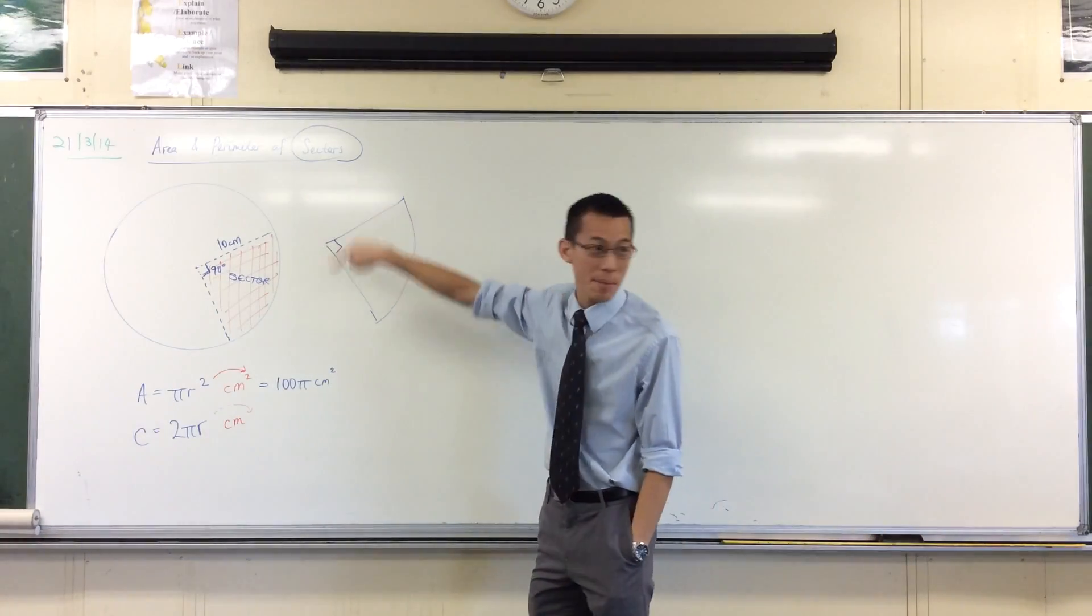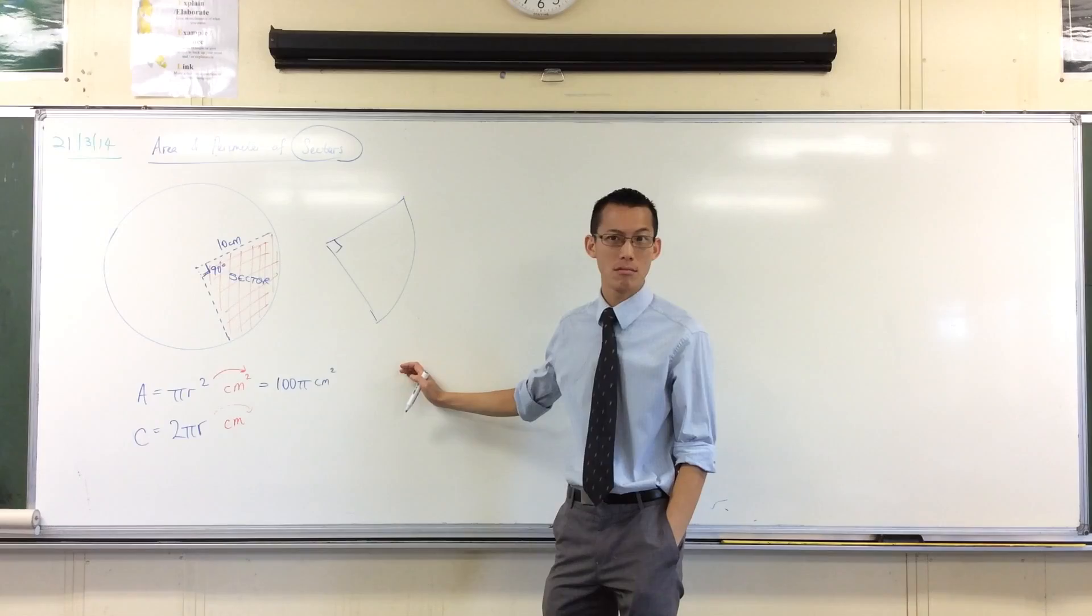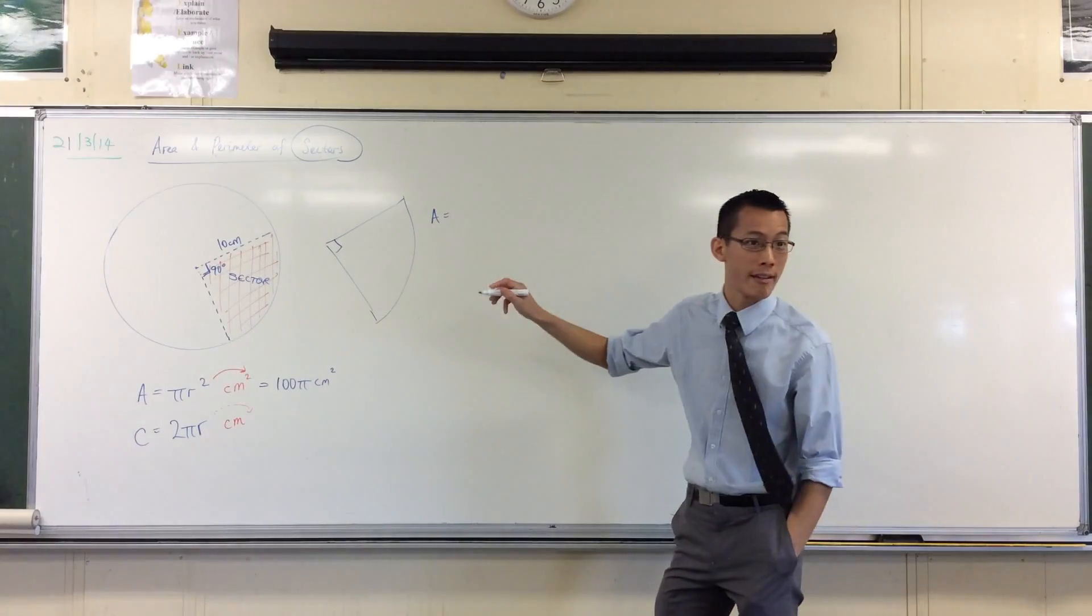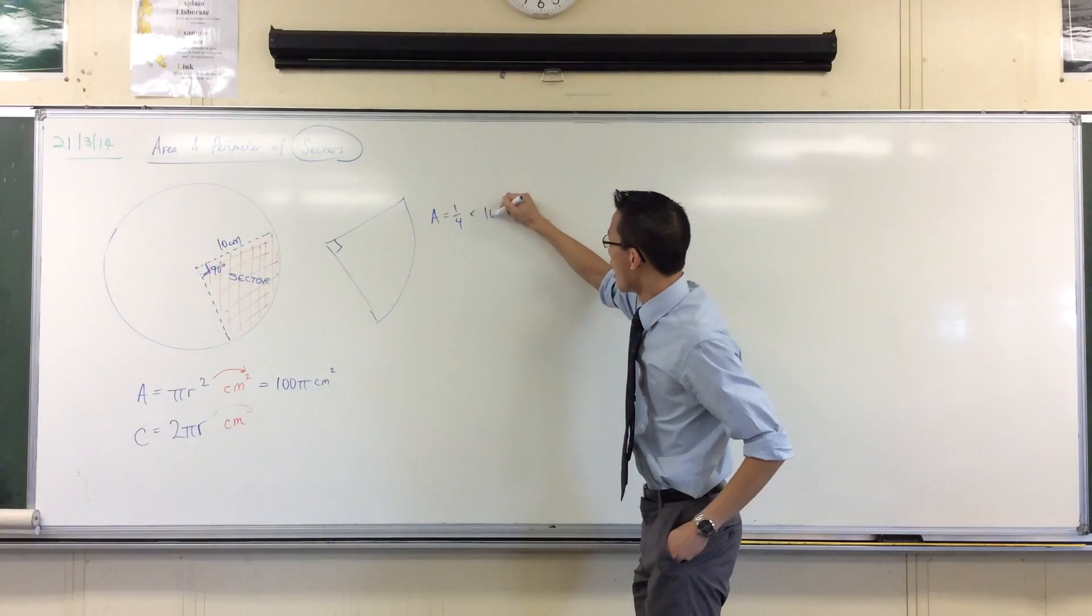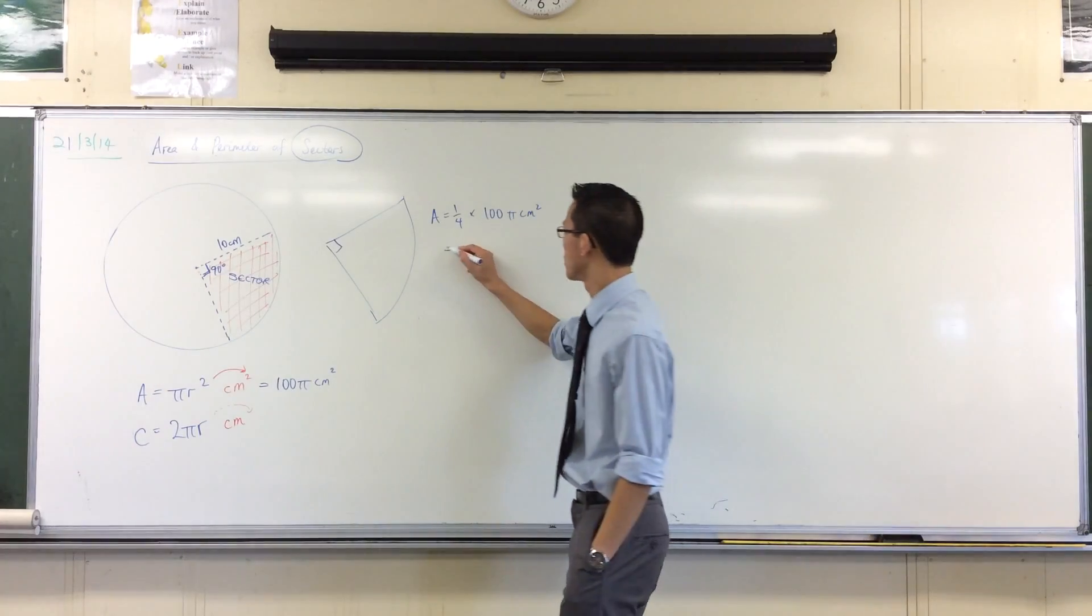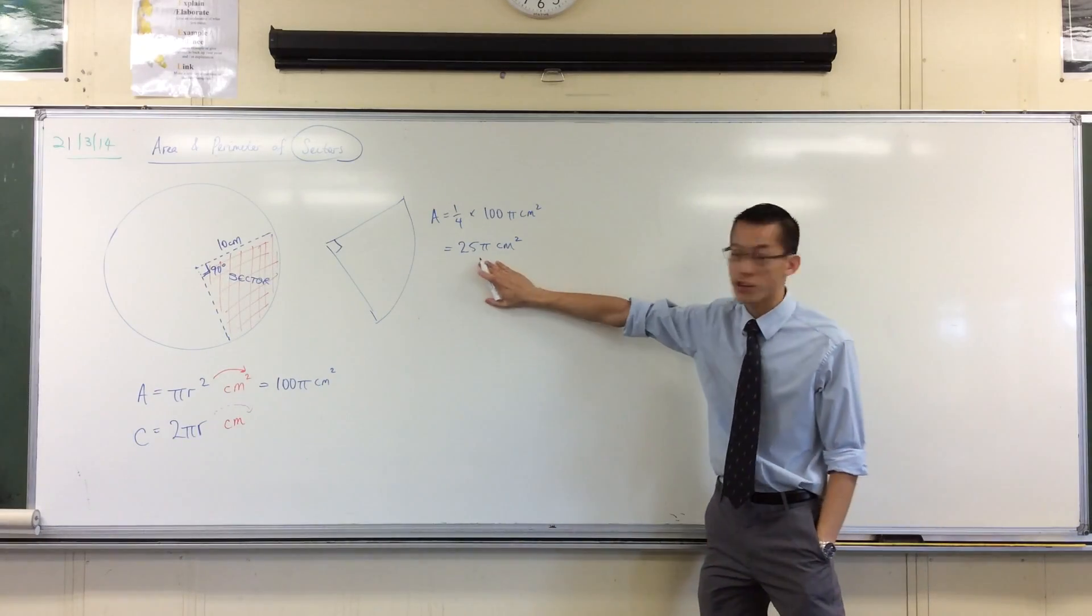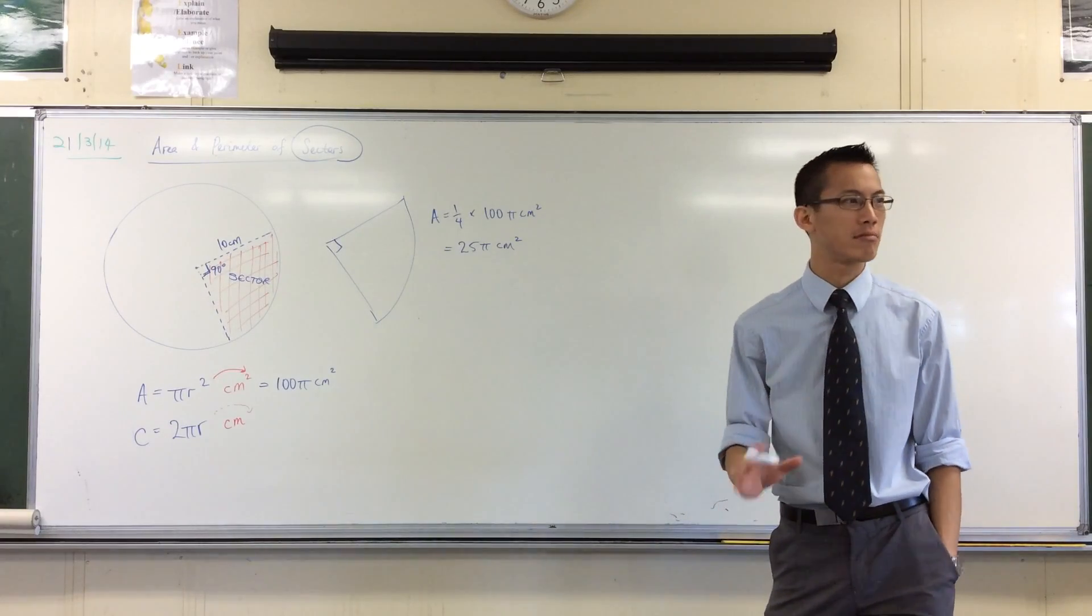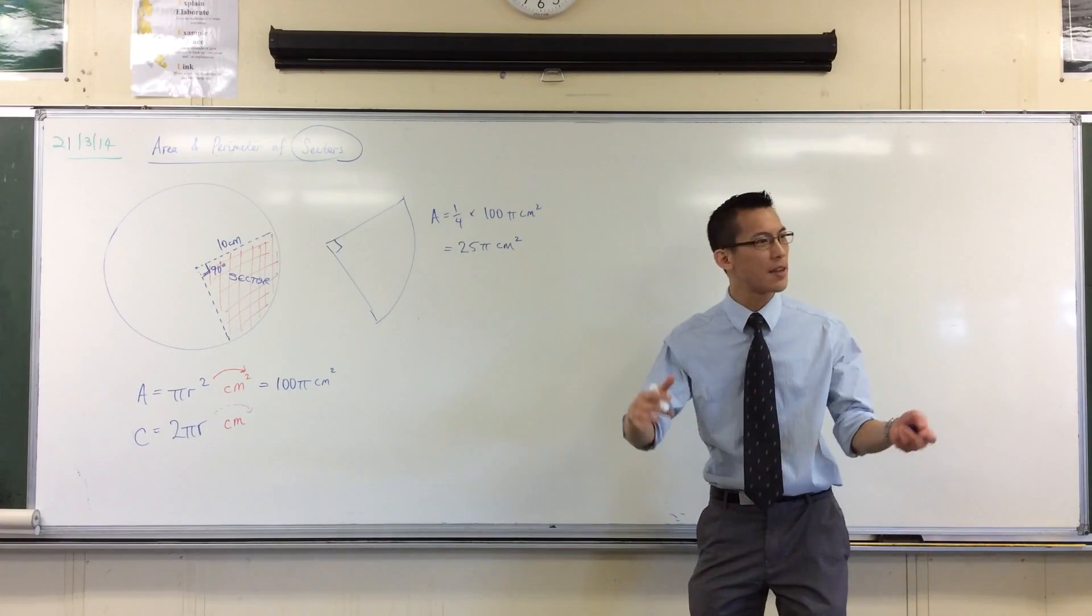Now you guys just told me that this shape here, this sector, is a quarter the size of the whole thing, right? So therefore its area should also be a quarter. Does that make sense? So the area of this sector is a quarter of whatever the area of the whole thing was, 100π centimeters squared. What is a quarter of 100? 25. So there you go, there's the area, and if you wanted to you could get a calculator out and work out what 25 times π is.